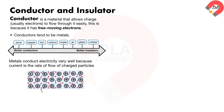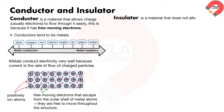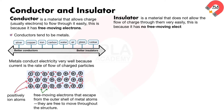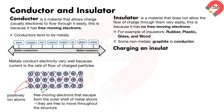In a metal, there are free-moving electrons that escape from the outer shell of metal atoms. These electrons are delocalized — they are free to move throughout the structure. The remaining atoms become positively charged ions. An insulator is a material that does not allow the flow of charge through it easily, because it has no free-moving electrons. Examples of insulators are rubber, plastic, glass, and wood. Some non-metals, such as graphite, allow some charge to pass through them, so graphite is a conductor.